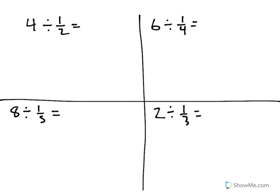Let's start at the top left first and think about what this looks like. 4 divided by 1 half. Now what this means is that I have 4 wholes to start with. So I'll go ahead and shade in 4 squares to represent those 4 wholes. And then what I'm going to